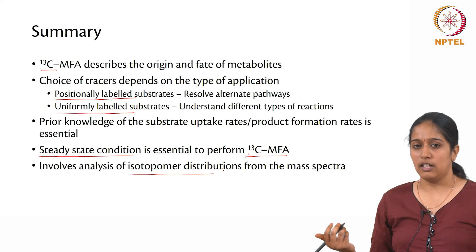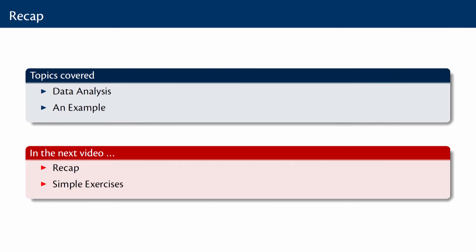In this video we covered data analysis — how to integrate data from the GCMS analytical technique into a metabolic model and look at different pathways through which the labeling patterns came. We also discussed a small example where 13C MFA has been applied. In the next video we will look at simple exercises dealing with data from GCMS and see how to process this data to carry out further analysis.